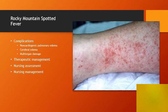Rocky Mountain spotted fever is the most severe and frequently reported rickettsial illness, usually transmitted from a dog tick or wood tick. Complications can include non-cardiogenic pulmonary edema, cerebral edema, or multi-organ damage. Long-term neurological involvement may result in partial paralysis, hearing loss, loss of bladder or bowel control, movement disorders, and language disorders. In most cases it resolves rapidly with appropriate antibiotic therapy; tetracyclines and doxycycline are the treatment of choice. The skin rash starts as small pink macular blanchable spots on the wrists, forearms, and ankles and rapidly spreads over the entire body.